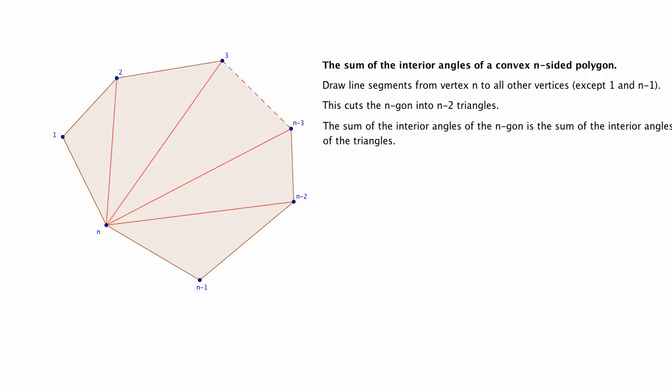Now the sum of the interior angles of this n-gon is the sum of the interior angles of the triangles. Hence, the sum of the interior angles is (n-2) times 180 degrees, because each triangle has an internal angle sum of 180 degrees.